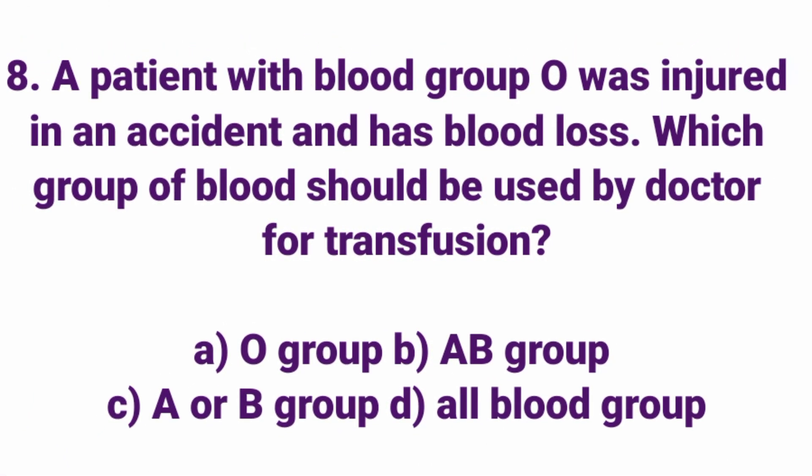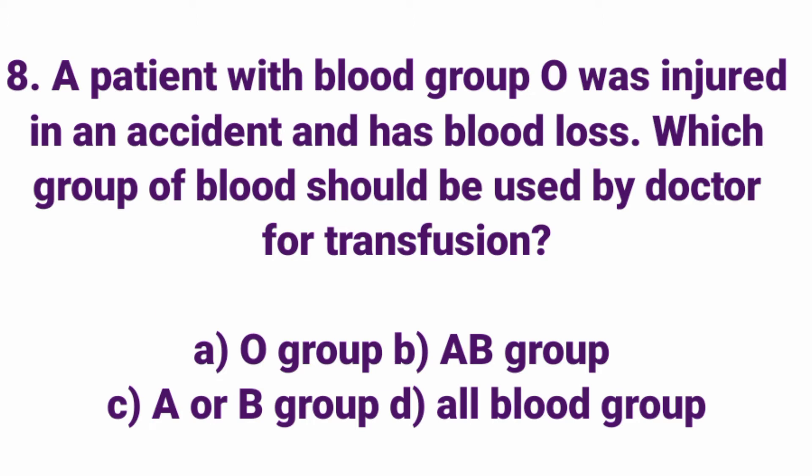A patient with blood group O was injured in an accident and has blood loss. Which blood group should the doctor effectively use for transfusion in this condition? Answer: Option A, O group. The doctor should use O group blood.